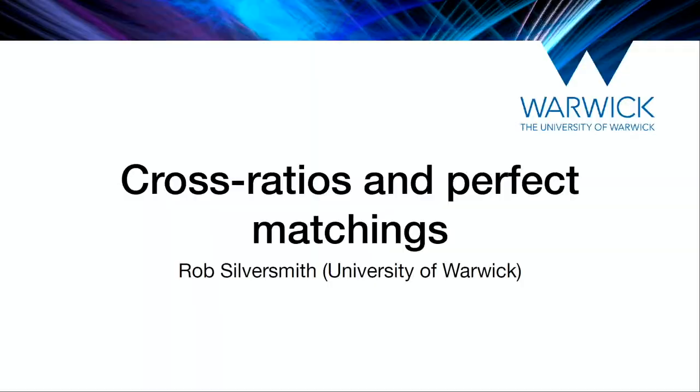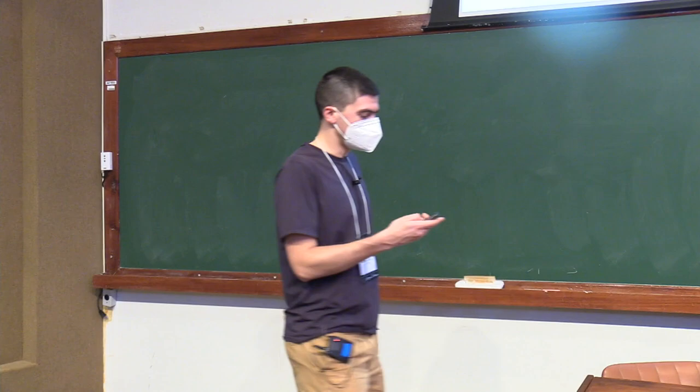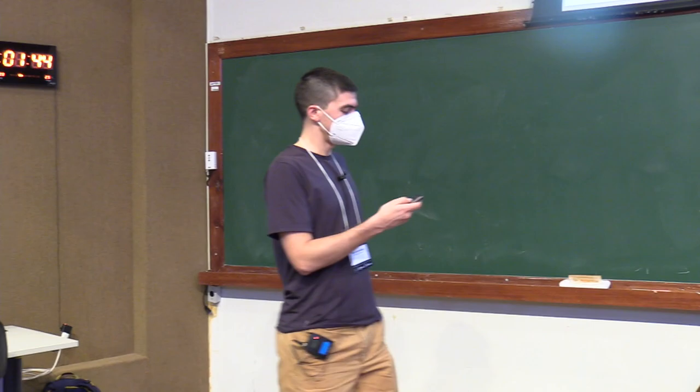Welcome back. It's my pleasure to introduce our next lecturer, Rob Silversmith, who will speak to us about cross-ratios and perfectness. Today I would like to tell you about a kind of combinatorial problem that comes out of algebraic geometry.